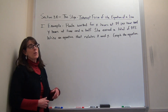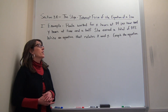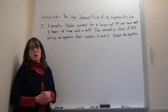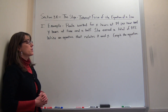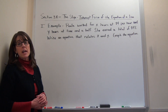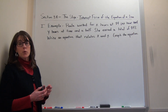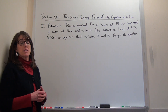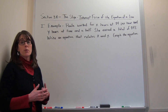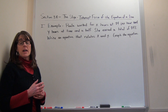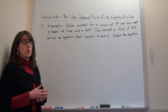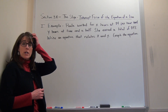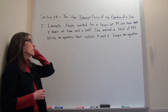Howdy. We're going to take a look at the slope-intercept form of the equation of a line. The slope-intercept form is a very handy form for writing the equation of a line, and the equation of a line represents all the different points on the line that satisfy that equation. So we're going to start off with a situational example here.